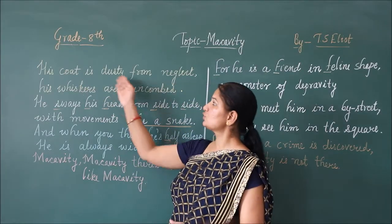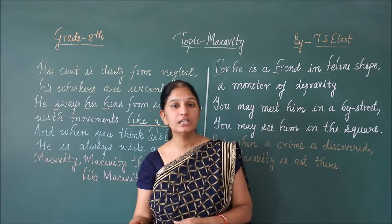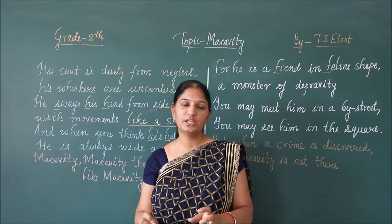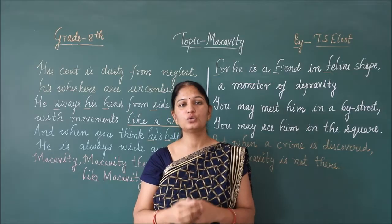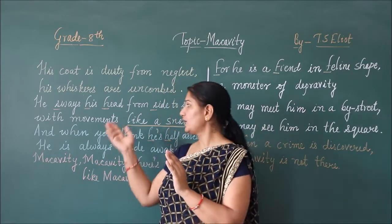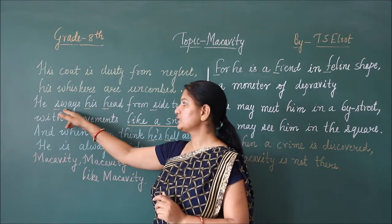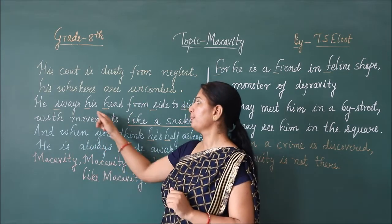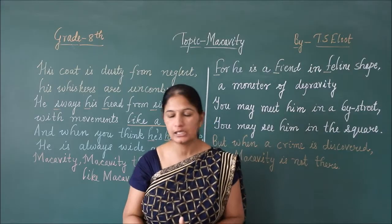His coat is dusty from neglect — his coat is full of dust as he neglects cleanliness. His whiskers are uncombed — his whiskers (moustache) are also not in perfect shape. He sways his head from side to side. In the line 'sways side to side,' the letter S is repeated, and in 'his head,' H is repeated — so the figure of speech in this line is alliteration.